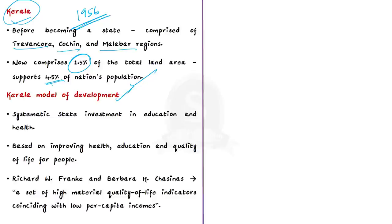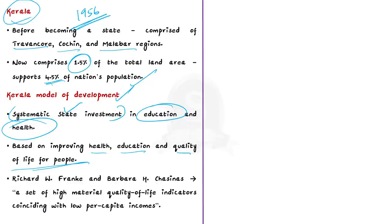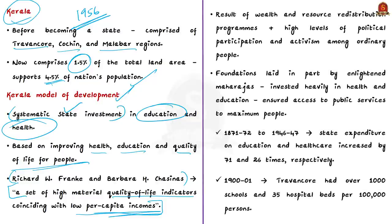The Kerala model is about systematic state investment in education and health. Such investments and mass campaigns have created transformation of the state. This model is based on improving health, education, and quality of life for people. Defined by Richard Franke and Barbara Chesnas, it is a set of high material quality of life indicators coinciding with low per capita incomes, distributed across nearly the entire population, brought about through wealth and resource redistribution programs complemented with high levels of political participation.